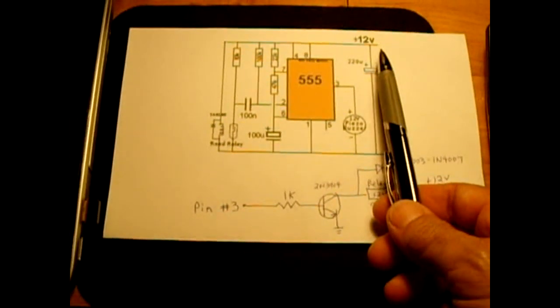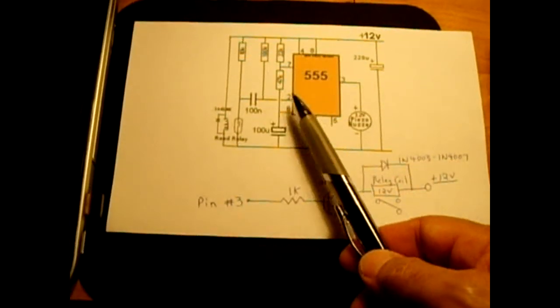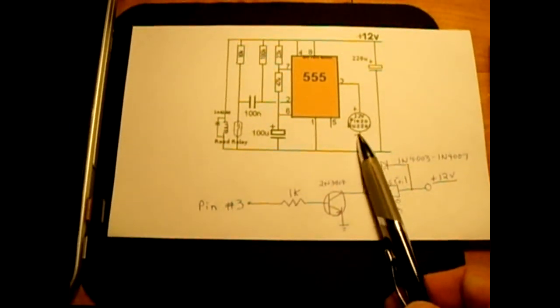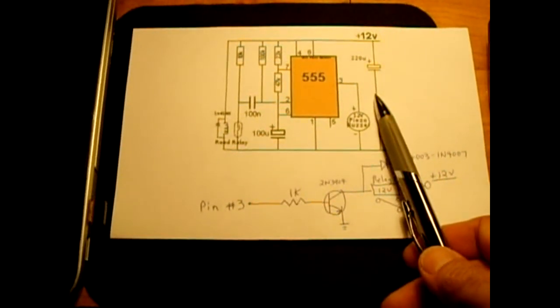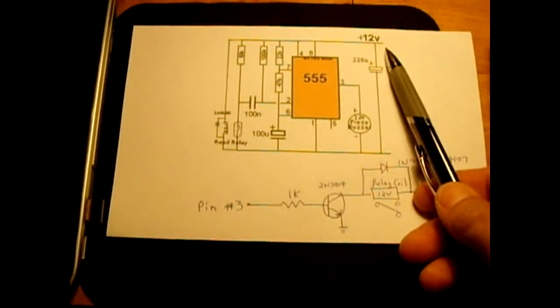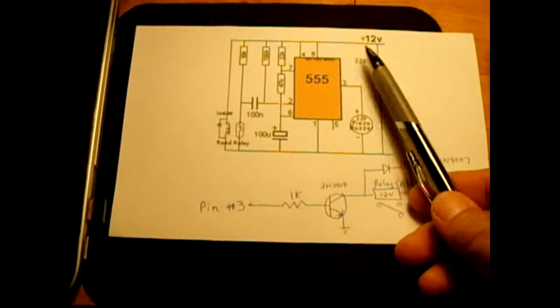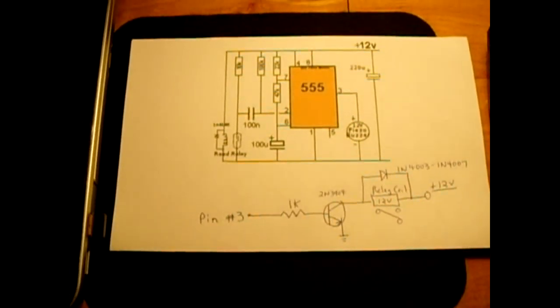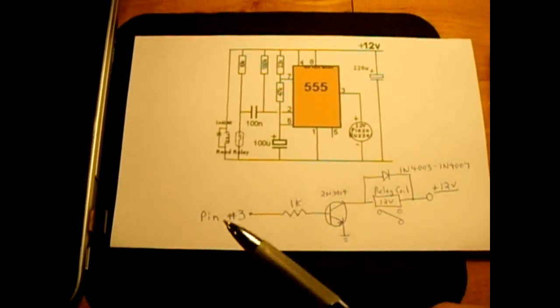They wanted a circuit that as soon as 12 volts is applied to the circuit, either a buzzer or a light can be activated for a set duration and then click off, even though power is still being supplied to the circuit. And that's what this circuit is here. I found the circuit online and I modified it a little bit.